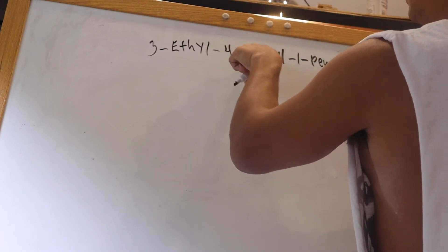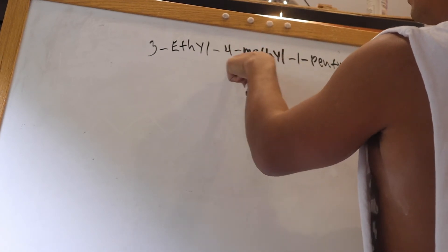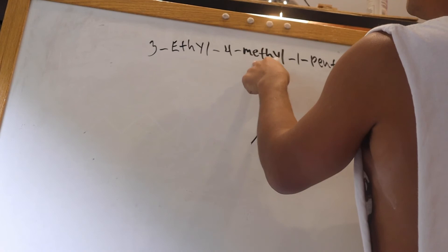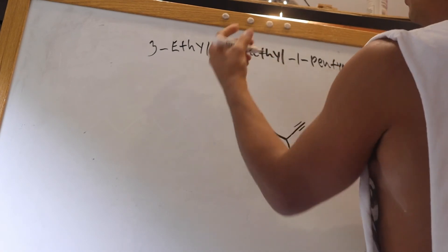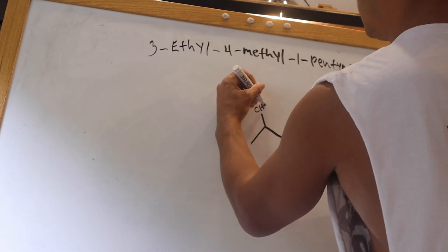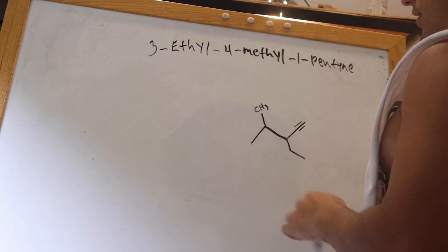Because that four is designating where that methyl group, that next part of the name is methyl. That four has to deal with this part of the name. So there'd be a CH3 over here. And that's what that would look like.